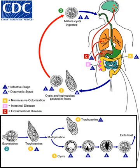Amoebiasis is present all over the world, though most cases occur in the developing world. About 480 million people are infected with amoebiasis, resulting in the death of between 40,000 to 110,000 people a year. Most infections are now believed due to E. dispar, which is more common in certain areas and symptomatic cases may be less common than previously reported. The first case of amoebiasis was documented in 1875, and in 1891 the disease was described in detail, resulting in the terms amoebic dysentery and amoebic liver abscess. Further evidence from the Philippines in 1913 found that upon swallowing cysts of E. histolytica, volunteers developed the disease.